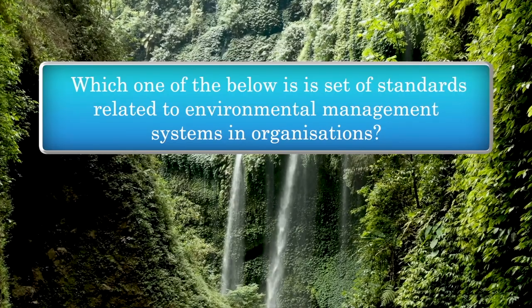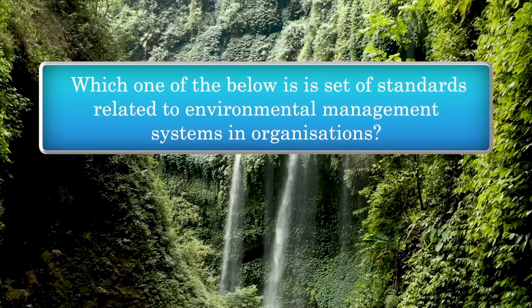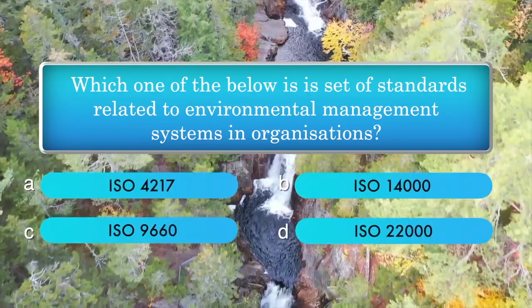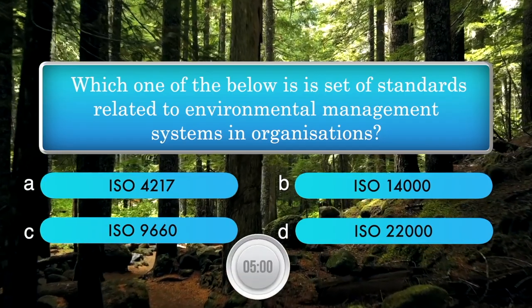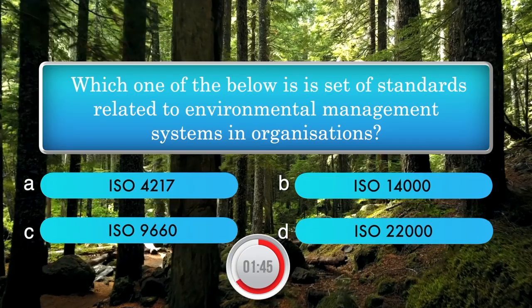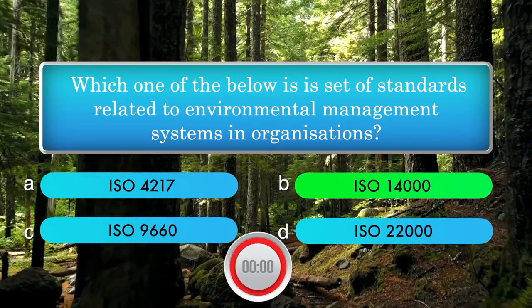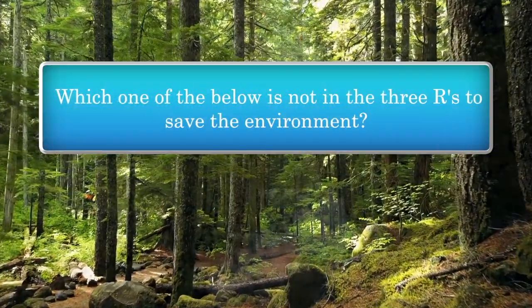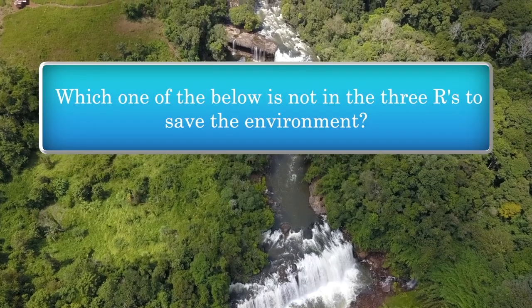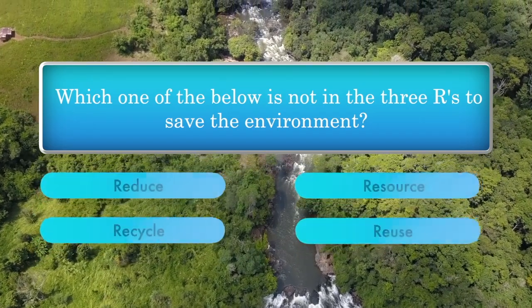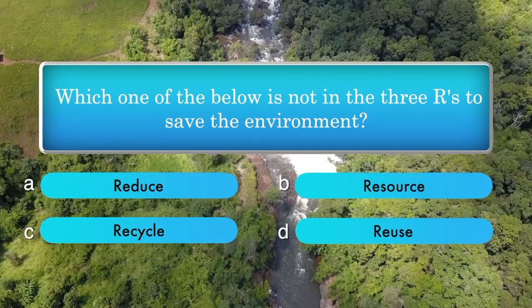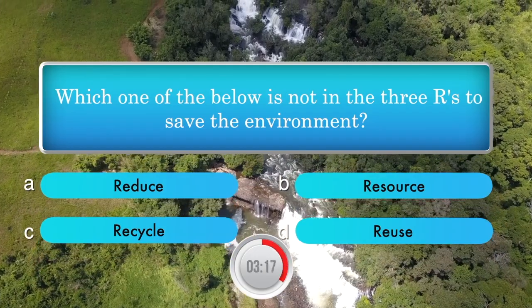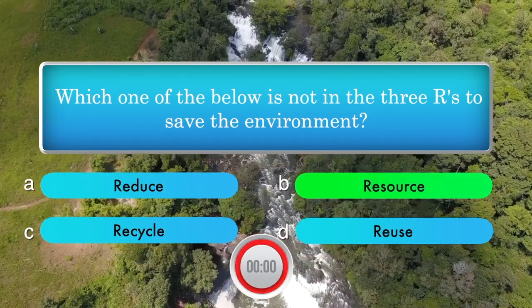Which one of the below is a set of standards related to environmental management systems in organizations? Options: ISO 4217, ISO 14000, ISO 9660, ISO 22000. Answer is ISO 14000. Which one of the below is not in the 3 R's to save the environment? Options: reduce, resorts, recycle, reuse. Answer is resorts.